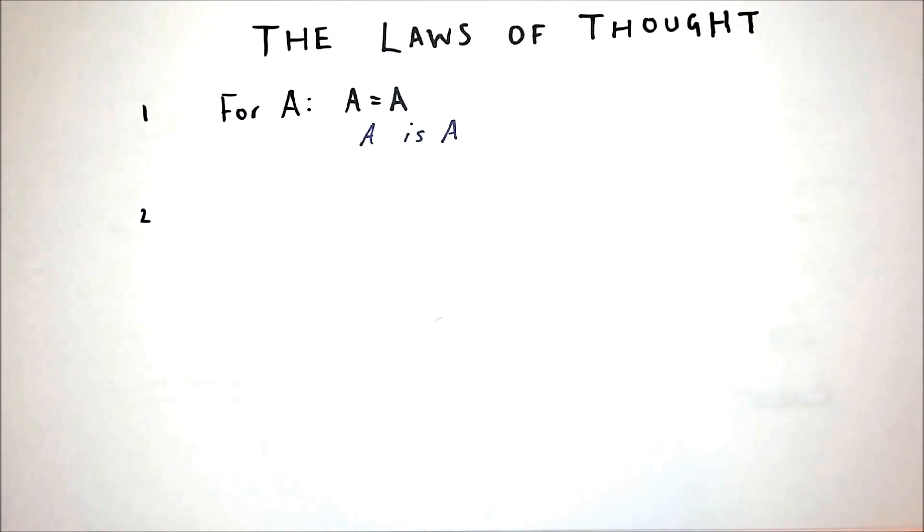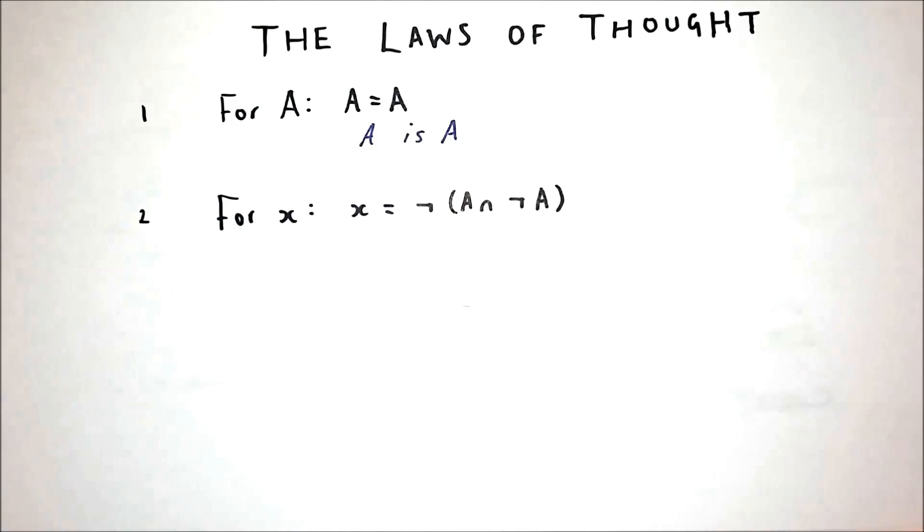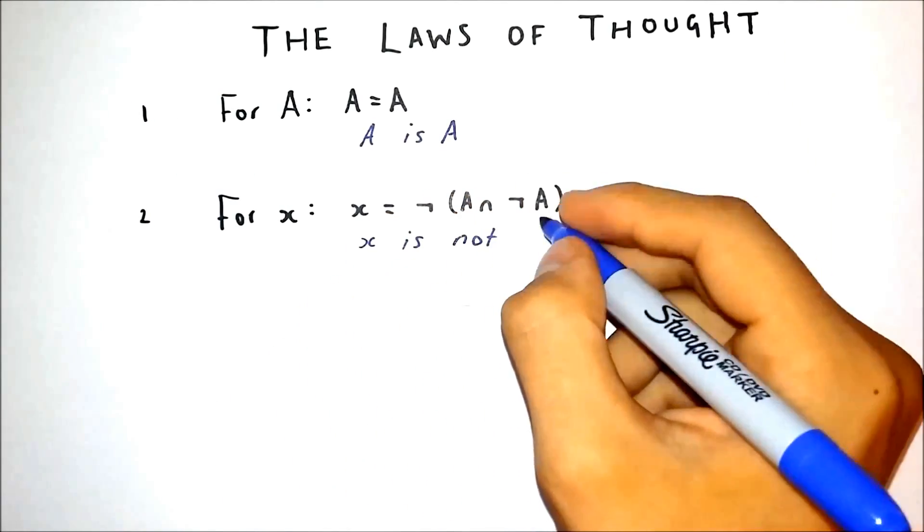The law of non-contradiction states, nothing can both be and not be. Two or more contradictory theories cannot be true at the same time.